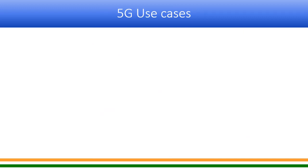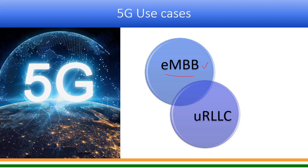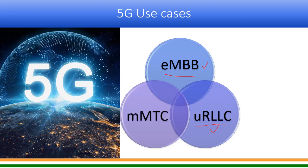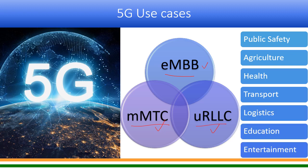The usage scenarios of 5G are: eMBB (Enhanced Mobile Broadband), URLLC (Ultra Reliable Low Latency Communication), and mMTC (Massive Machine Type Communication). These three usage scenarios combined with the capabilities will enable 5G use cases in public safety, agriculture, health, transport, logistics, education, entertainment, and all other sectors of the economy.